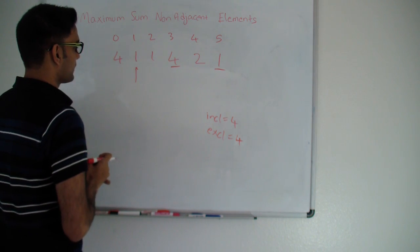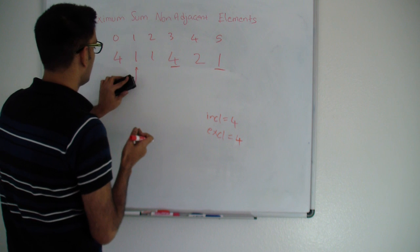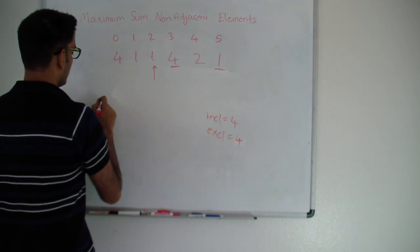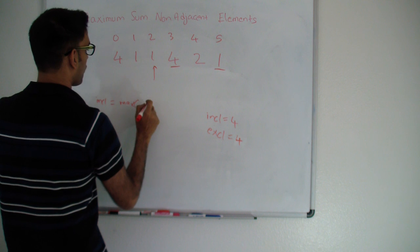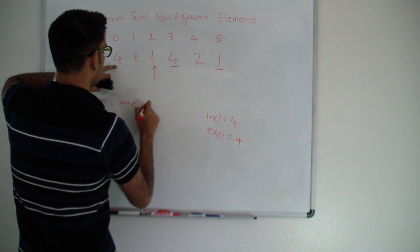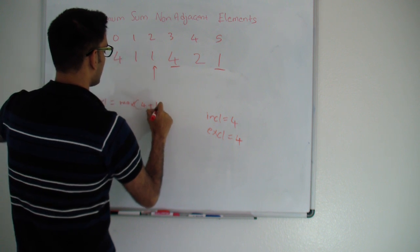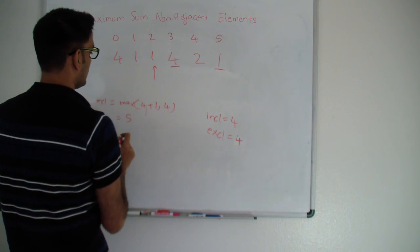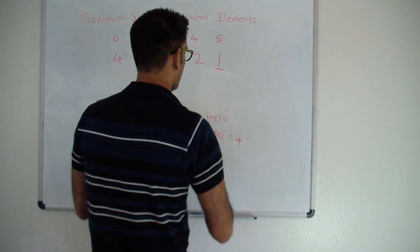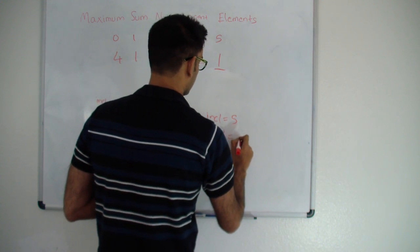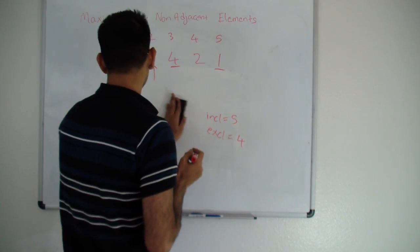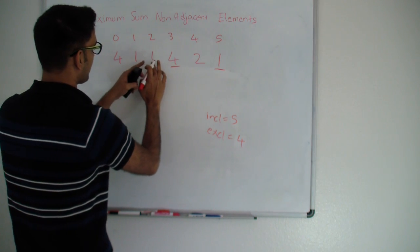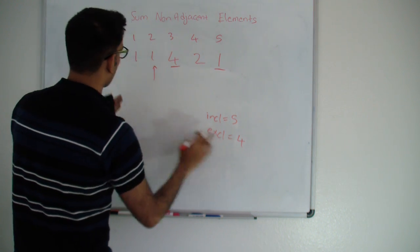Note that inclusive doesn't mean I need to include this number — it means if I did include this number, what is the best I can do. Moving to the next element: the new inclusive is max(old exclusive + current value, old inclusive) = max(4+1, 4) = 5. My new exclusive is the old inclusive which is 4. So including this 1, the best I can do is 5 (which is 1+4), and excluding it the best I can do is 4.